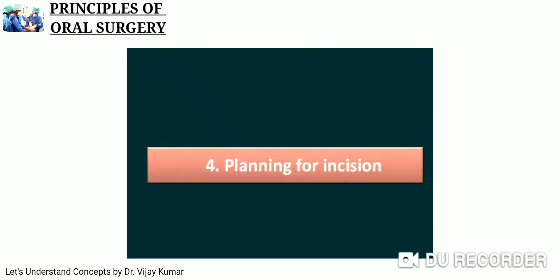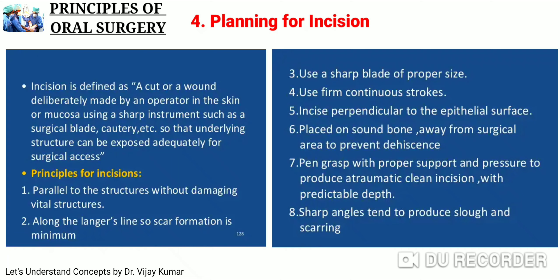The fourth principle is planning for incision. An incision is defined as a cut or wound deliberately made by an operator in the skin or mucosa using a sharp instrument such as a surgical blade or cautery, so that the underlying structure can be exposed adequately for surgical access. The principles for incision is an important short note topic that can be examined.